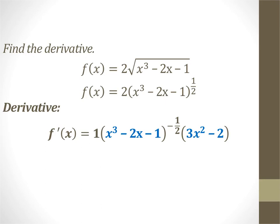You've got a square root on that one, so you need to change the square root to exponential form. By doing that, now we have a problem just like the last one. Bring the 1/2 down — 1/2 times 2 is 1, that's where the 1 comes from. Keep what's inside exactly as it is, subtract 1 from the exponent: 1/2 minus 1 is negative 1/2. Then chain rule out the derivative of what's inside: derivative of x cubed is 3x squared, derivative of negative 2x is negative 2, derivative of a constant is 0.